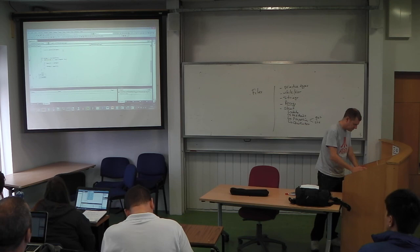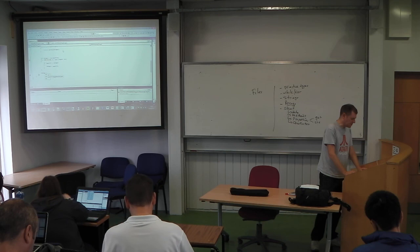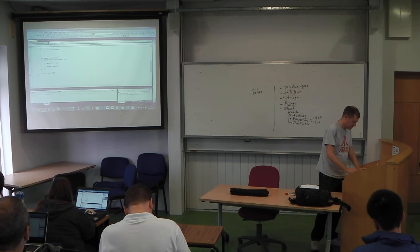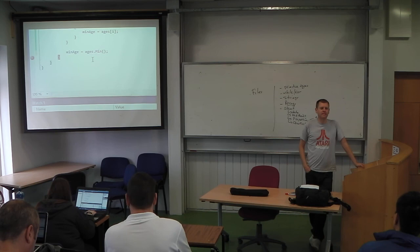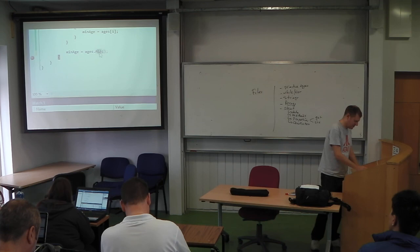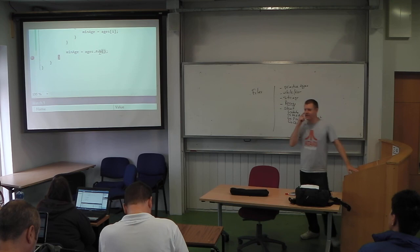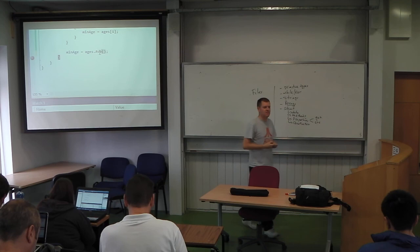As somebody pointed out, you can use built-in LINQ methods on the array: `ages.Min()`, `ages.Max()`, and `ages.Average()` are all available. Look — there they are. That's powerful; there's nothing left to code. These are pre-existing methods on the array class in C#.